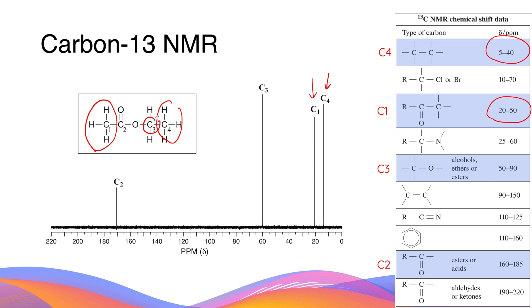Carbon-3 is not only connected to a carbon but also has a single bond with the adjacent oxygen atom. This is found in a 50 to 90 ppm range for its chemical shift. And on the spectrum, you can see it over here.